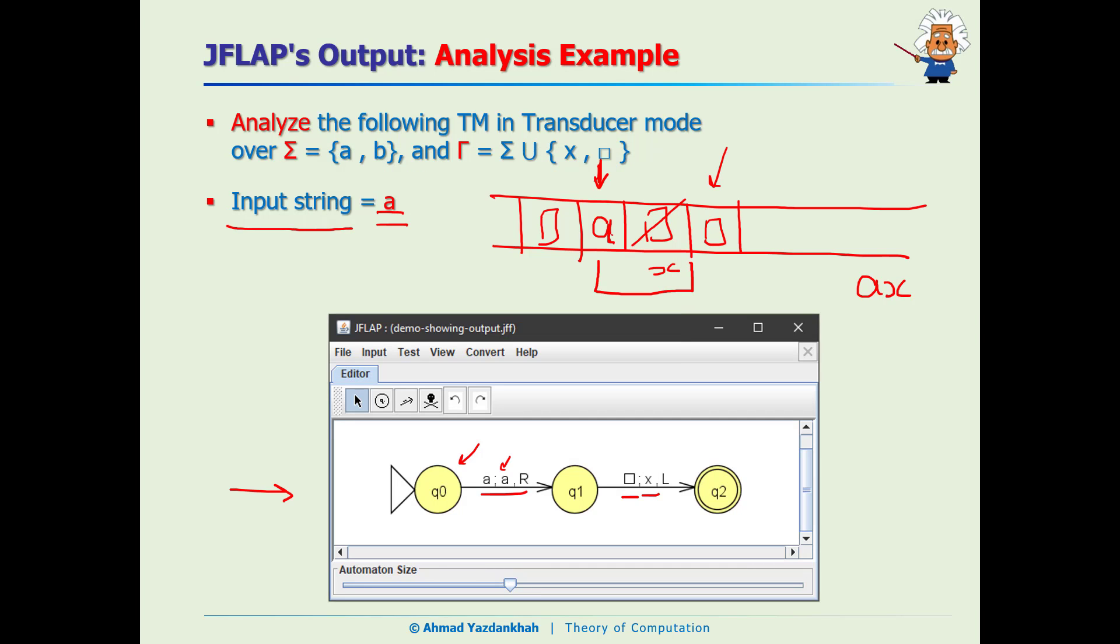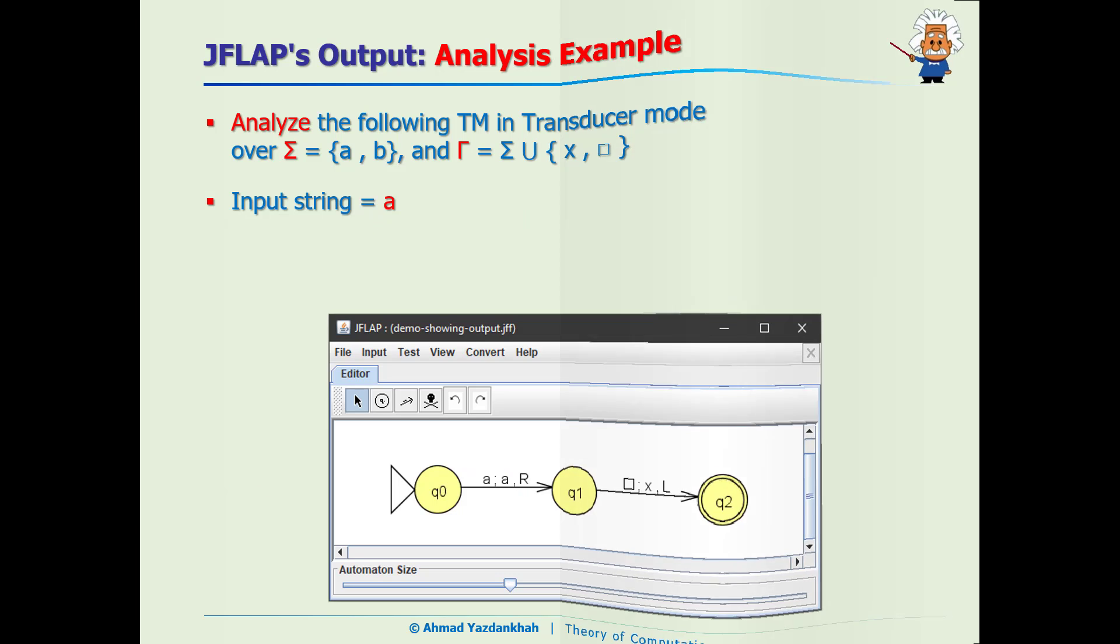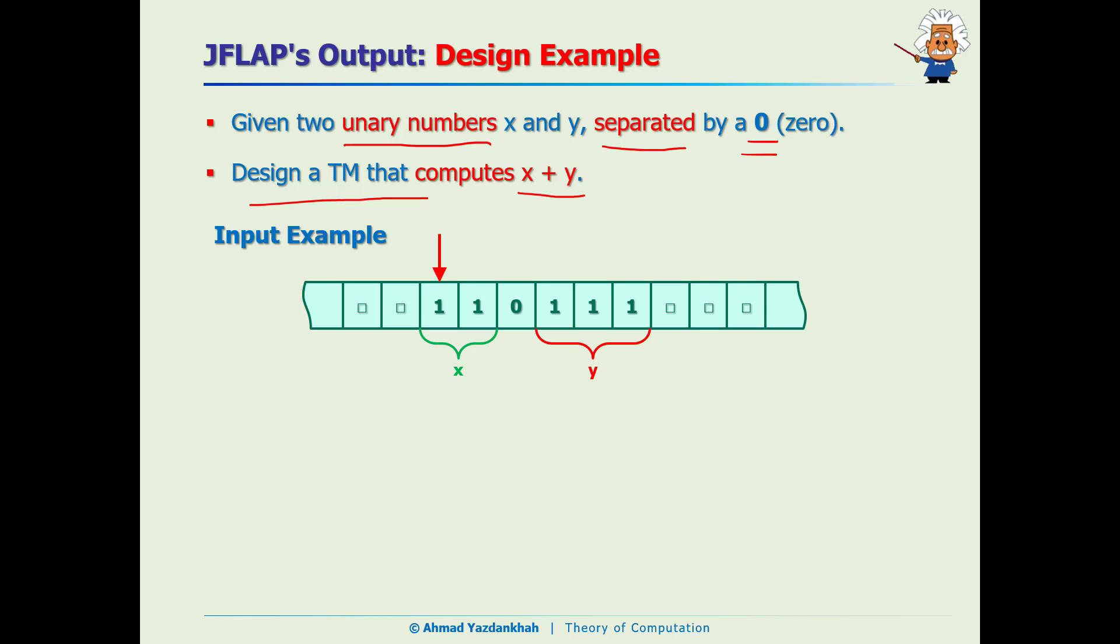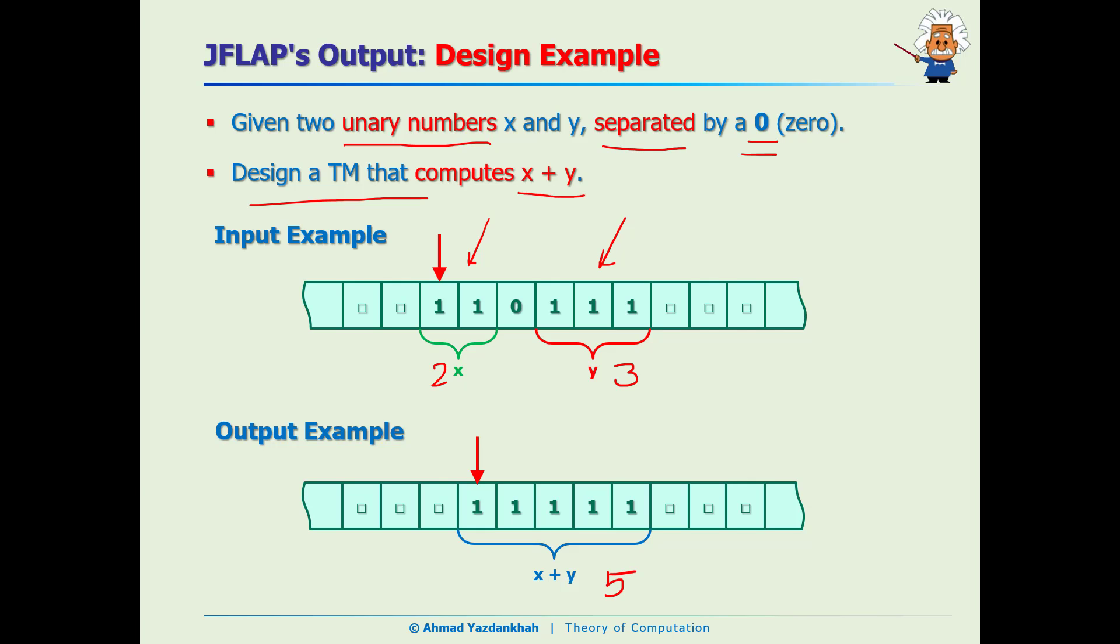Now let me solve a design example. We have two unary numbers and they are separated by a zero, and we want to design a Turing machine that computes x plus y. So in fact here are some examples: if this is the x and this is the y, then the output should look like this. So we have two here and three here, the output should be five.